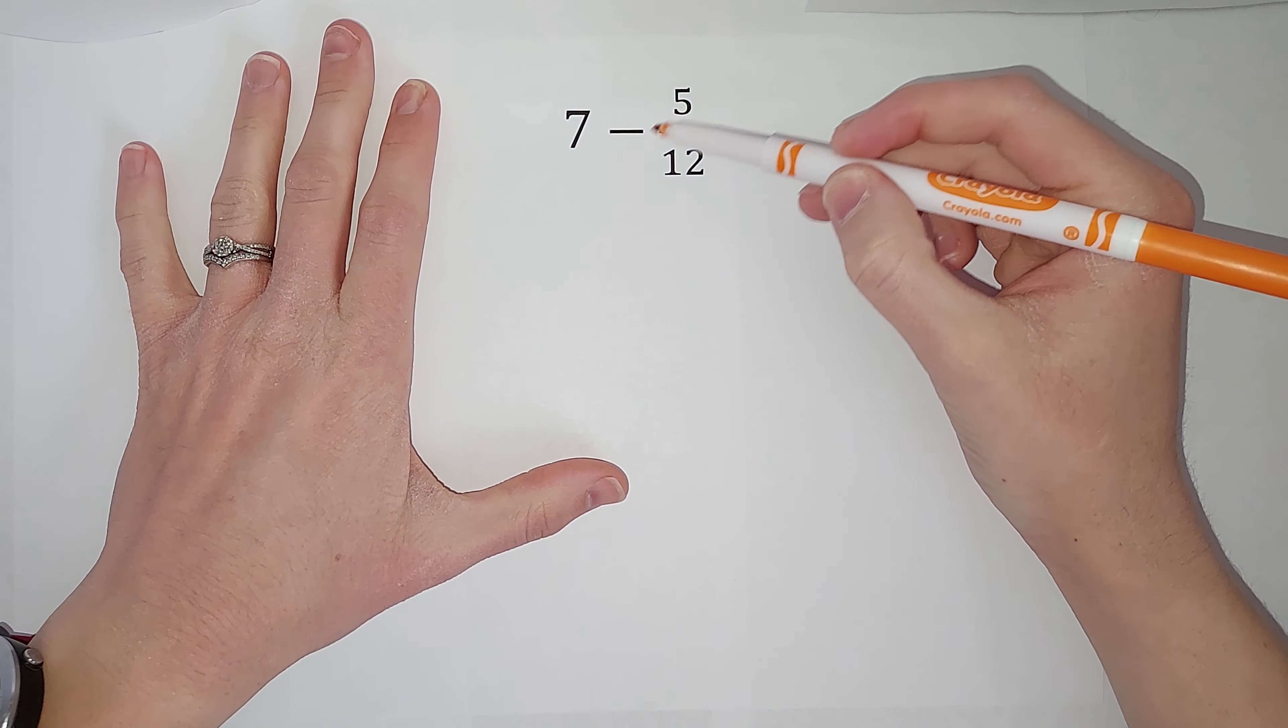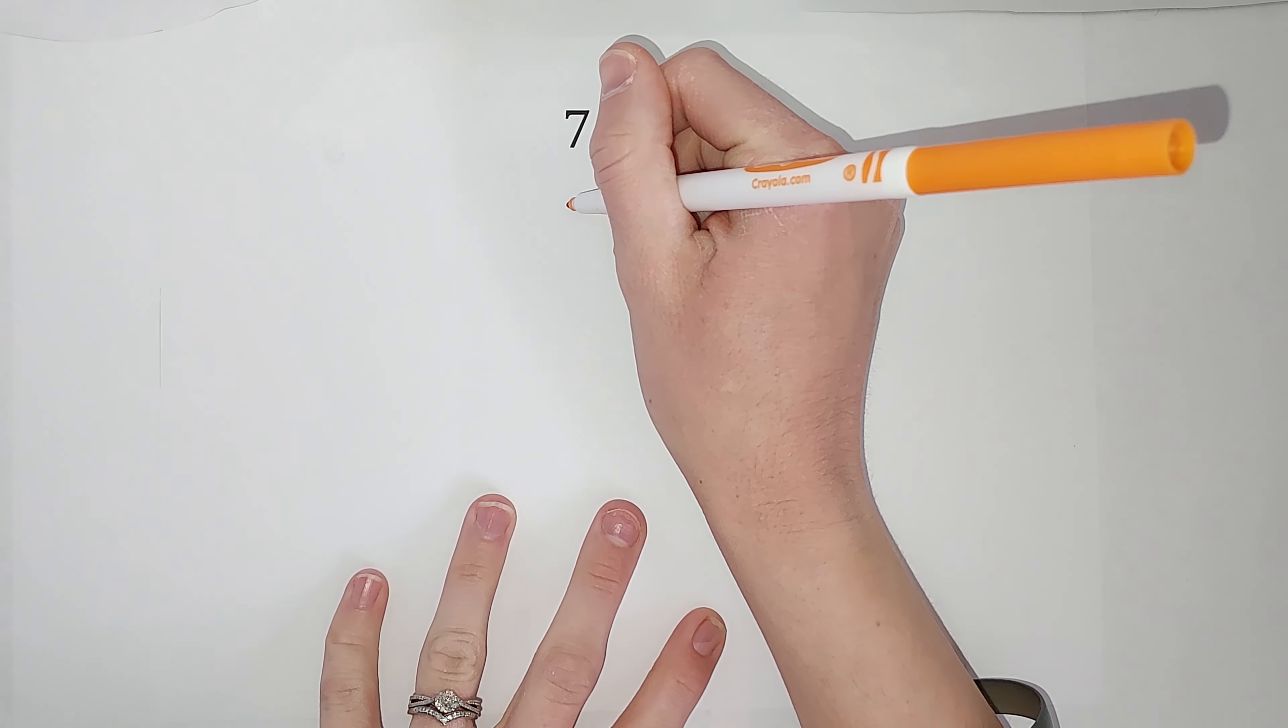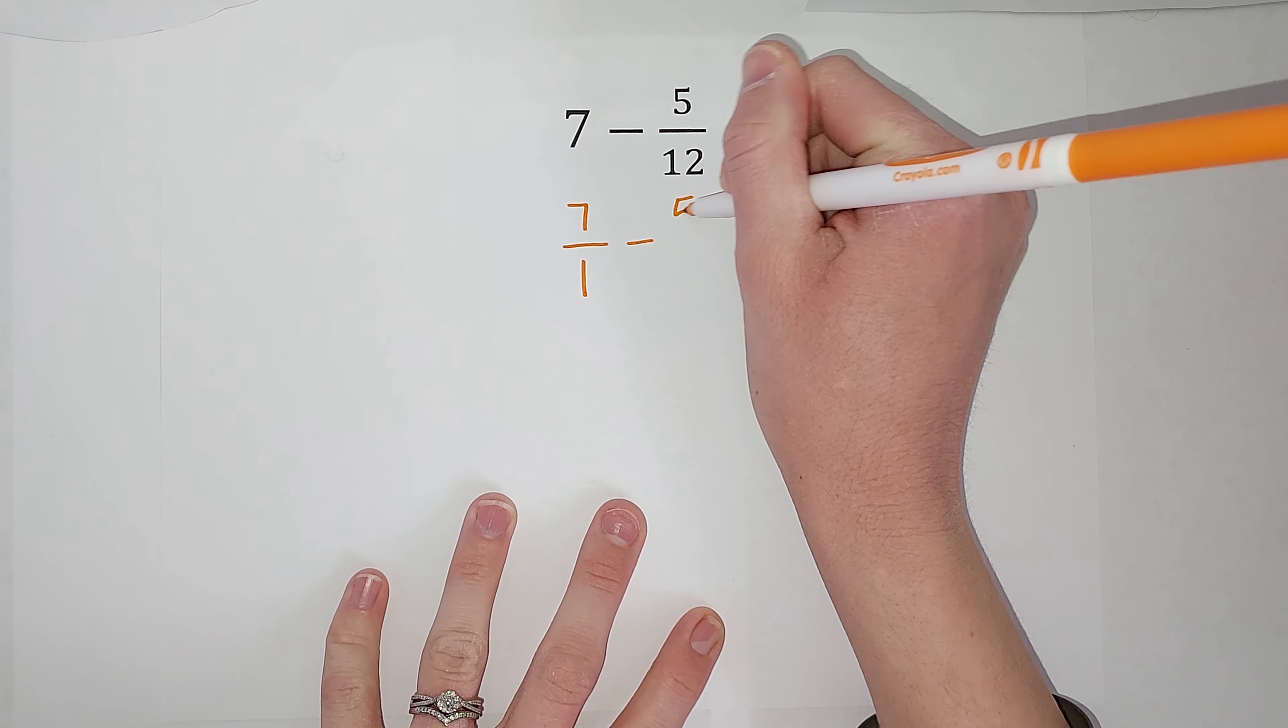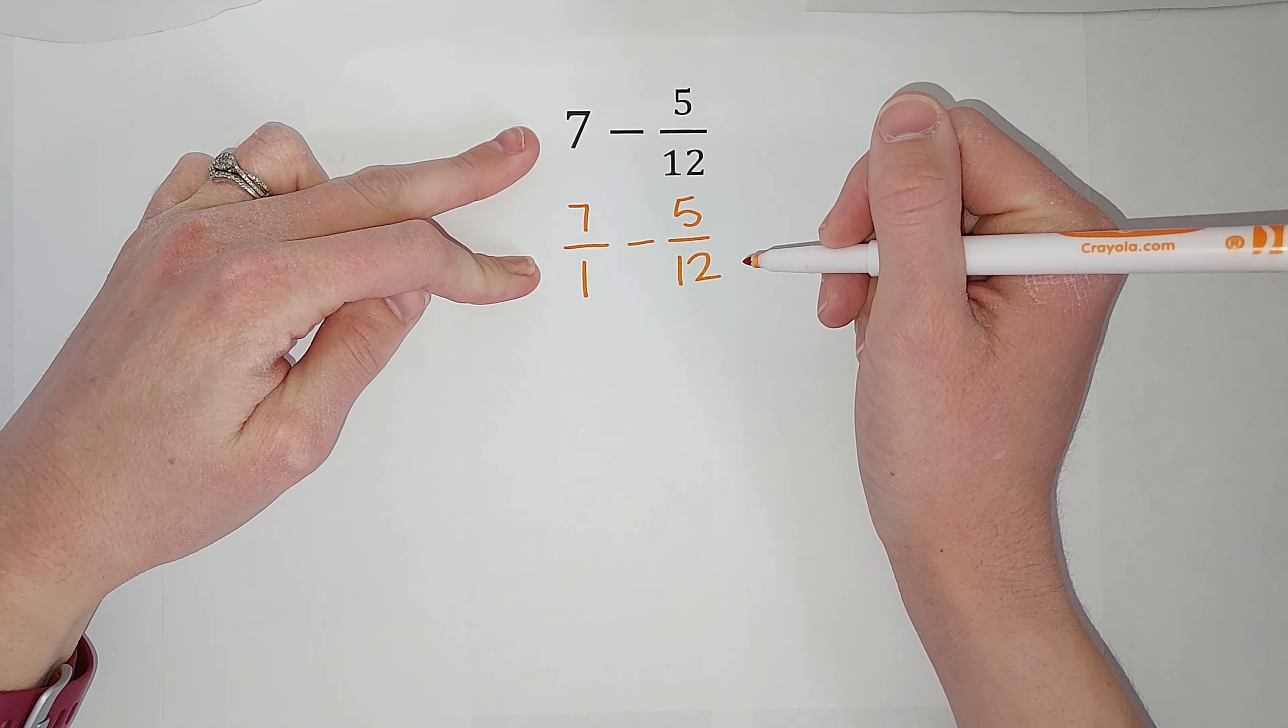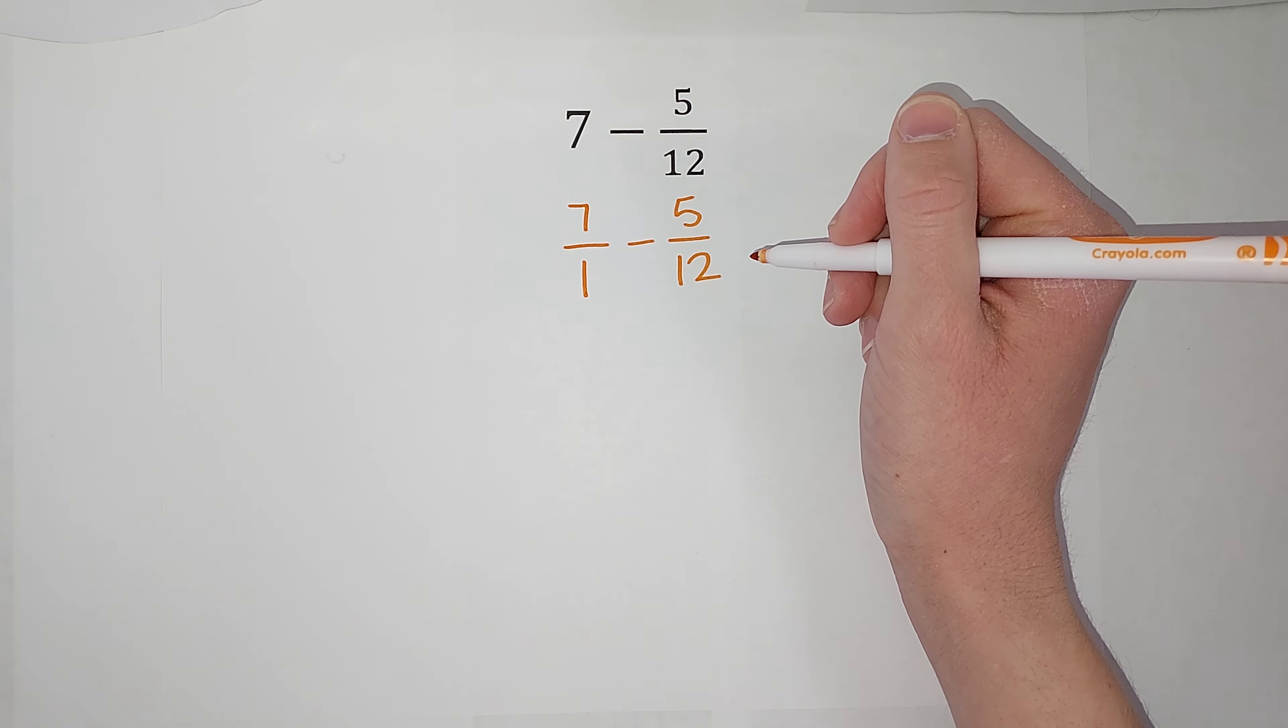Now if you're saying 7 doesn't have a denominator, it doesn't look like it does, but any number that doesn't look like a fraction we can turn into a fraction, it's just over a 1. So I could rewrite this as 7 over 1 minus 5 twelfths. 7 and 7 over 1 are the same thing. We just usually don't write that 1 because usually we don't need to.